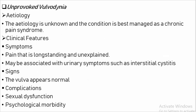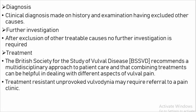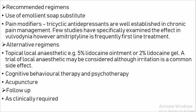Unprovoked vulvodynia — Etiology: Unknown. Clinical Features — Symptoms: Pain. Signs: The vulva appears normal. Complications: Sexual dysfunction, psychological morbidity. Diagnosis: Clinical diagnosis made on history and examination, having excluded other causes. Treatment: The British Society for the Study of Vulval Disease recommends a multidisciplinary approach. Treatment-resistant unprovoked vulvodynia may require referral to a pain clinic. Recommended regimen: Use of emollient soap substitute. Alternative regimen: Topical local anaesthetic, cognitive behavioral therapy and psychotherapy, acupuncture. Follow-up: As clinically required.